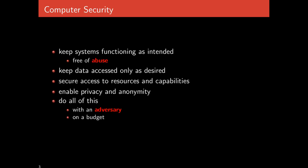The goal of computer security is to keep systems functioning as intended, free of abuse from attackers. We want to keep data accessed only by people we want to have access. We want to secure access to resources and capabilities — we don't want anyone from the internet printing on our printers. We want privacy and anonymity. But we want to do all of this with an adversary on a budget. Security failures are not random failures; they are intentional attacks by an intelligent adversary attempting to break the system.